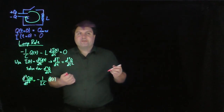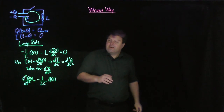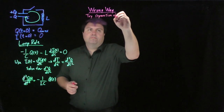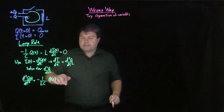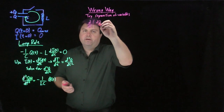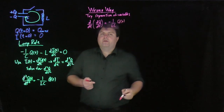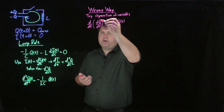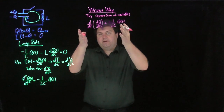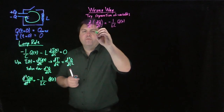It's instructive to see the wrong approaches first. One thing we could try is separation of variables. However, we have to recognize what the second derivative means: dq/dt equals negative one over LC times q(t) — and our ratio is inside a derivative. We would need to integrate both sides with respect to time, but we don't know q(t). So we can't perform separation of variables here.